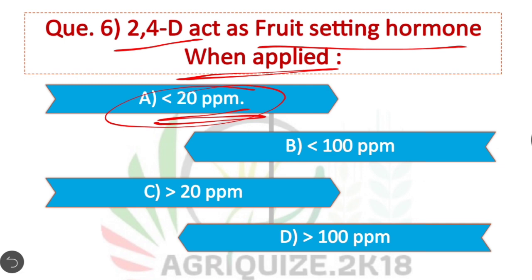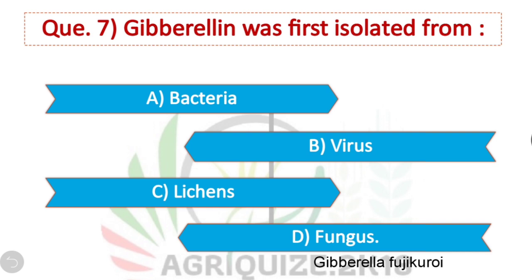Question 7: Gibberellin was first isolated from — Gibberellin was first isolated from the fungus named Gibberella fujikuroi.